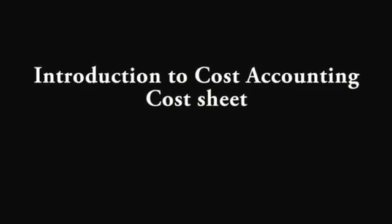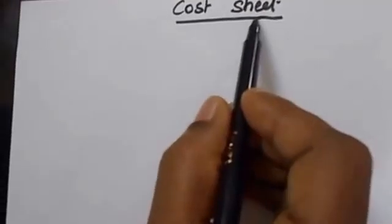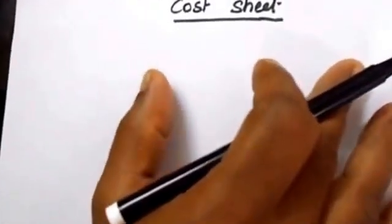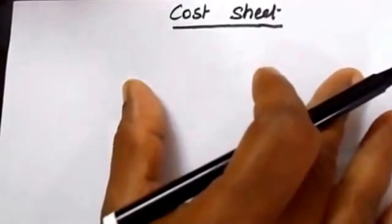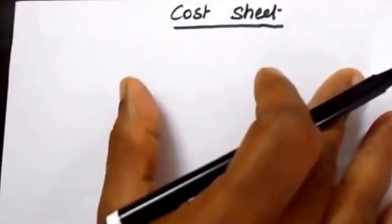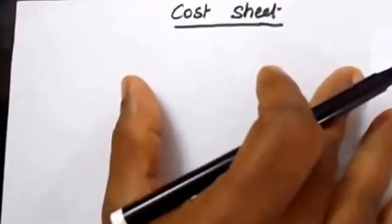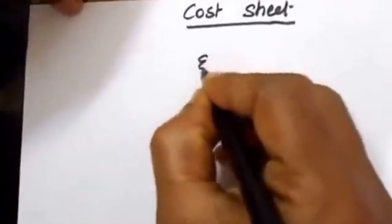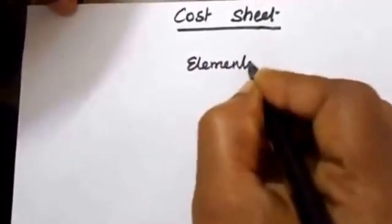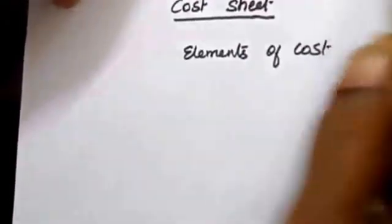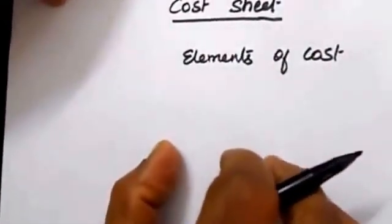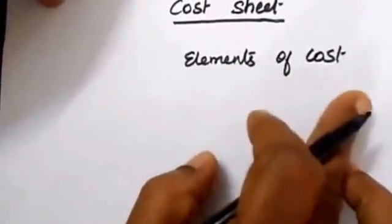In this video I am going to explain cost sheet. So what is the meaning of cost sheet? It calculates and summarizes the total cost of production. Elements of cost means what are all the costs involving in the production process — that is combinedly called as elements of cost.